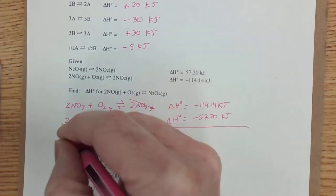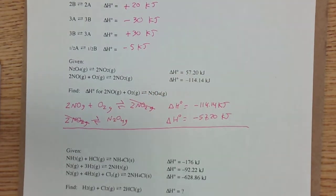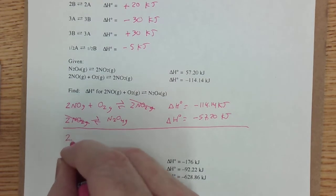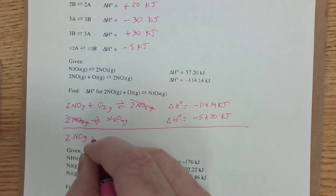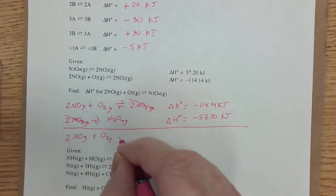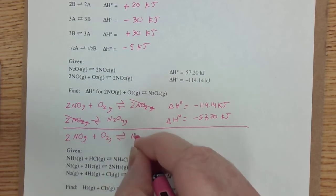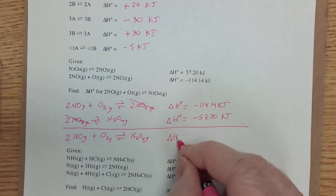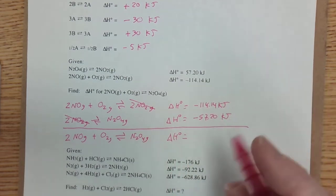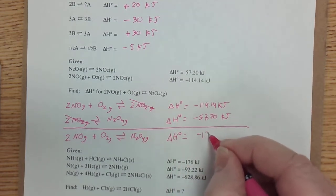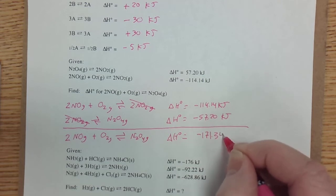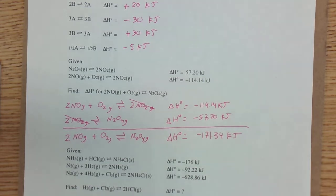Since heats of reaction are additive, I'm going to add these together. The 2NO2 gas is going to cancel out, just like in algebra. I'm left with 2NO gas plus O2 gas gives me N2O4 gas. And the delta H naught for this is these two added together, negative 171.34 kilojoules.